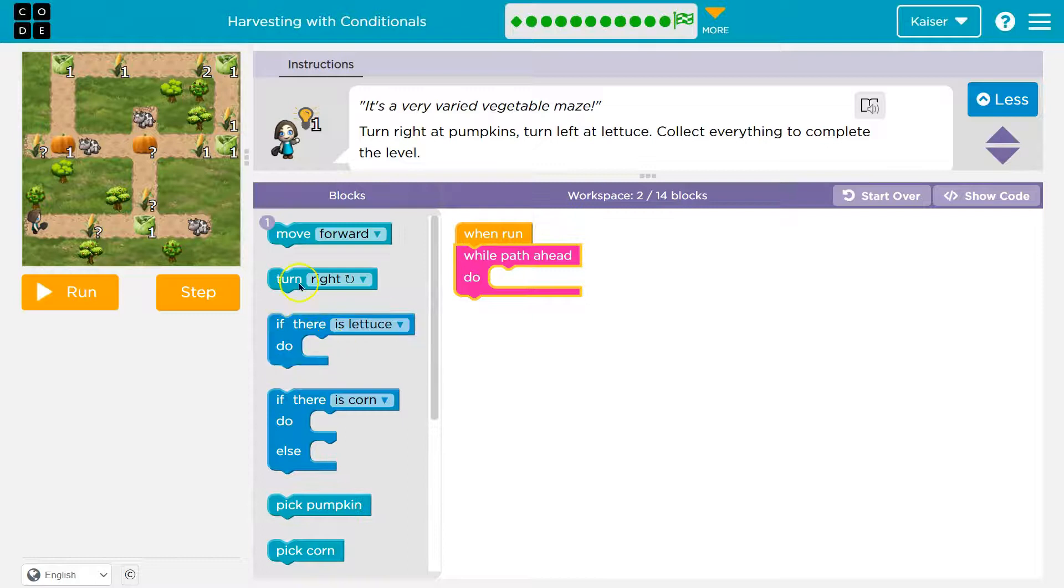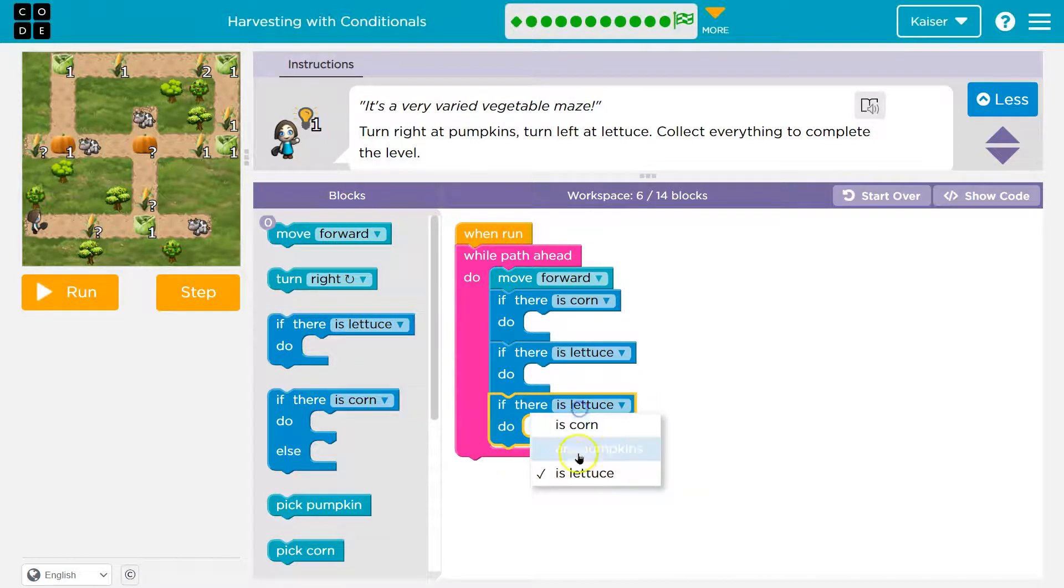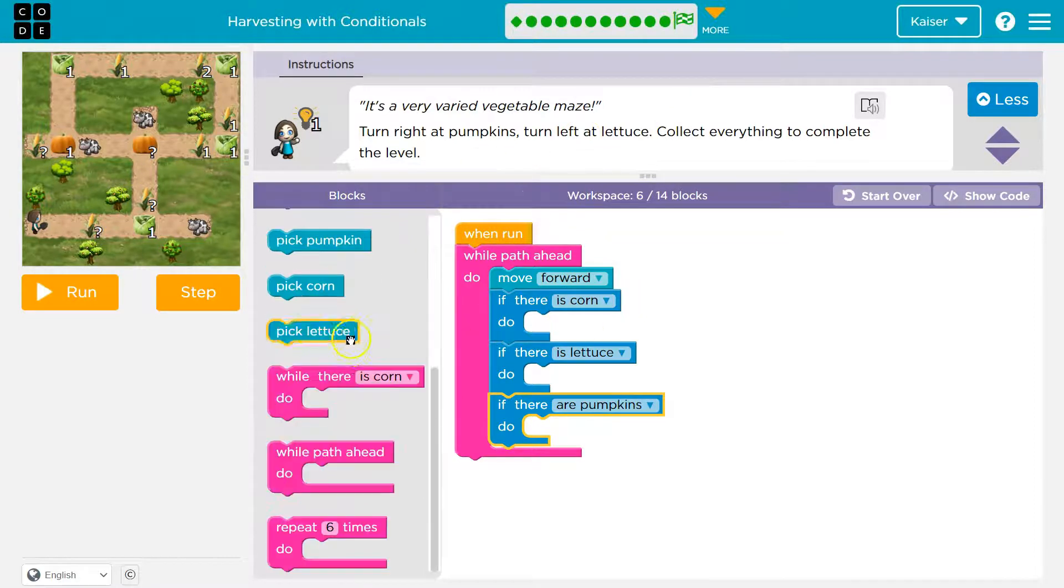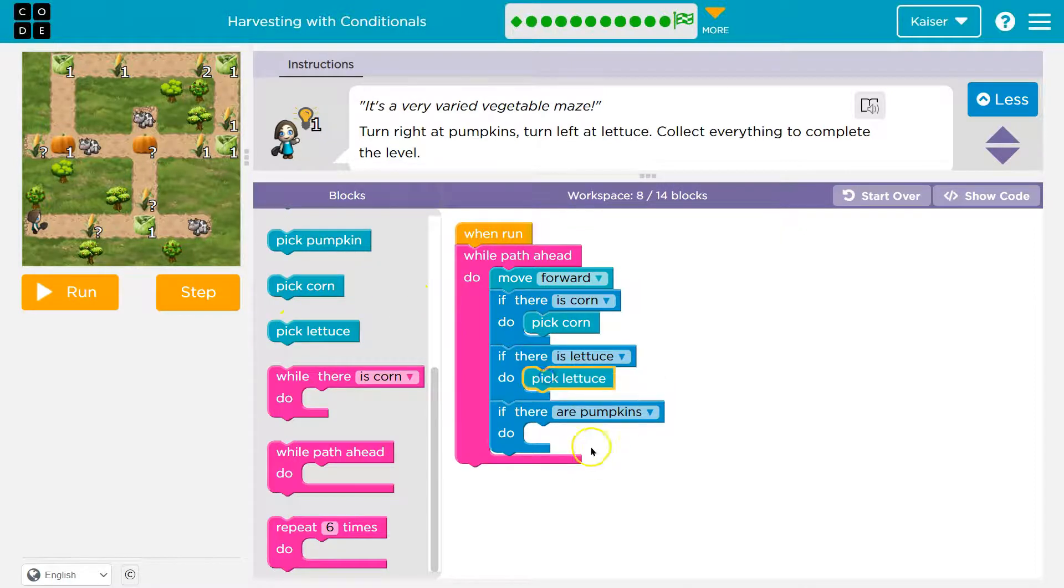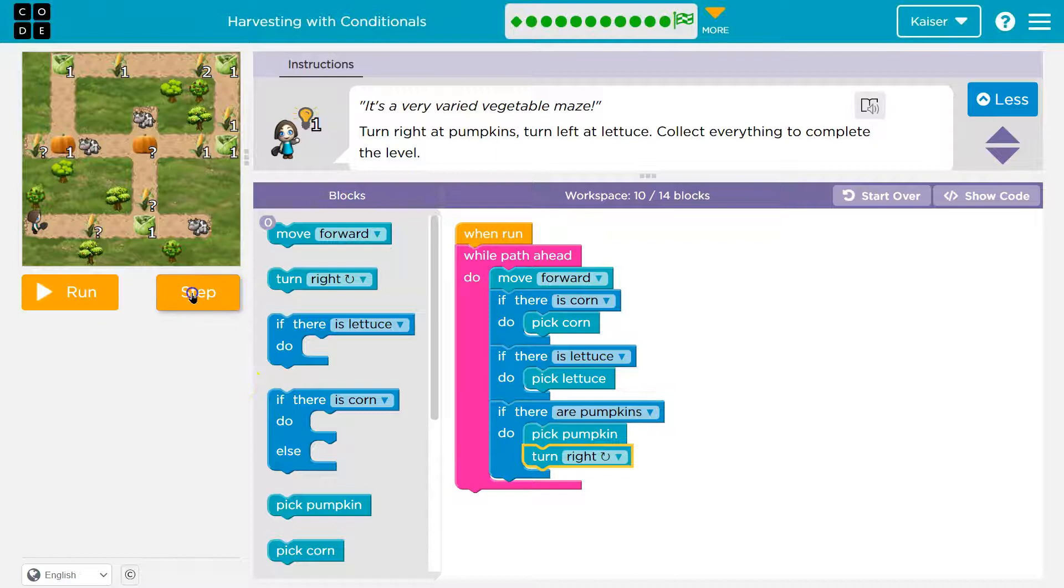So as long as there's path ahead, I'm going to say move forward. And notice I only use it once. We should not use more than 14 blocks. As long as there's path ahead, I'm going to move forward. If there is, I'll start with corn. Then I'm going to do if there's lettuce. Then I'm going to do if there's a pumpkin. Now, just like we did before, if you're confused, you need to go back a few minutes and watch this other section. So if there's corn, I'm going to pick the corn. If there is lettuce, I'm going to pick the lettuce. Now what? Well, if there's pumpkins, I also need to pick the pumpkin. But it tells us right here that we need to turn left. So turn right at pumpkins. Boom. All right. Let's step through this and see if this is going to do it.